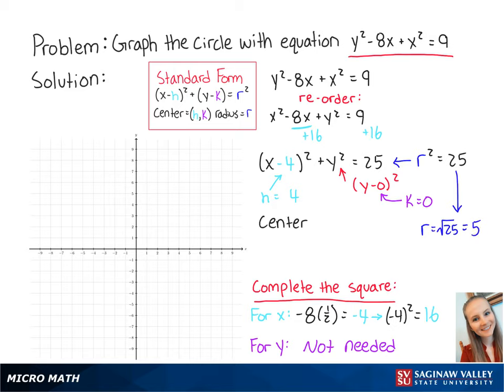So now we know that the center is at 4, 0, and that the radius is equal to 5. Now we can graph the points of the circle. The center is at 4, 0, and since the radius is 5, our outside points are 4, 5, 9, 0, 4, negative 5, and negative 1, 0.